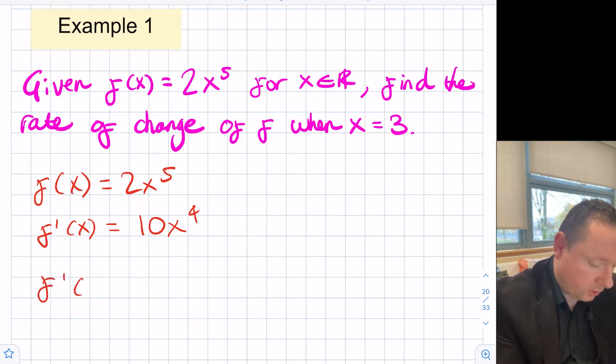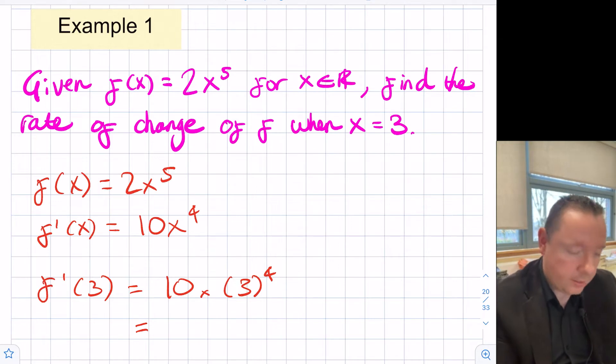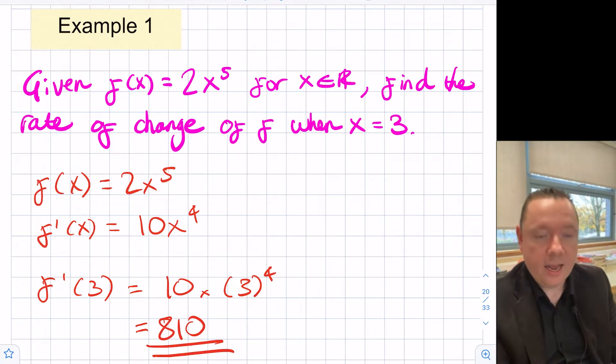So f dash x is 10x to the 4. So f dash 3 equals 10 times 3 to the power of 4. So we need to work out 10 times 3 to the power of 4. We can use the calculator for that. 3 times 3 is 9 times 3 is 27 times 3 is 81 times an extra 10 makes 810. So our rate of change is 810 at x equals 3.